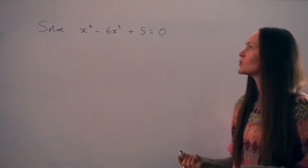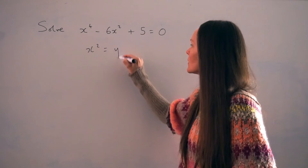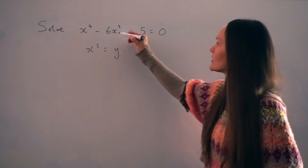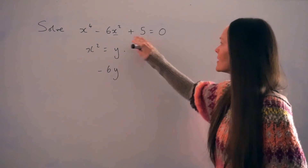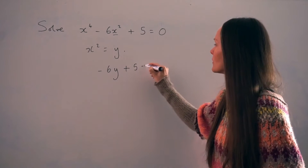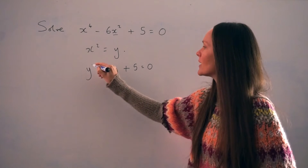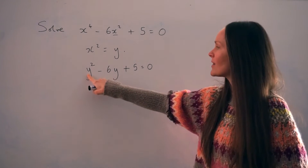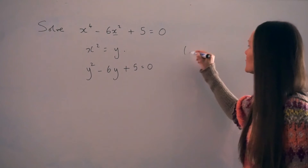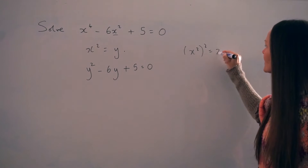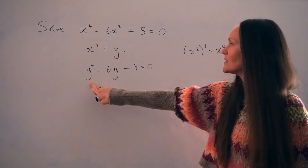The first substitution I'm going to make is to switch x squared to the letter y. So this term here is going to change to y, so that I have minus 6y. This part just stays the same — plus 5 equals 0. And this term, x to the power of 4, becomes y squared. Because if you square the letter y, it's the same thing as squaring x squared. And if you square x squared, that's the same thing as x to the power of 4. So that's why x to the power of 4 is replaced with y squared.